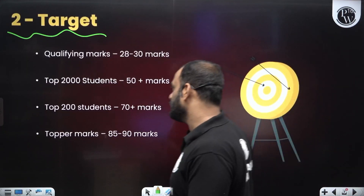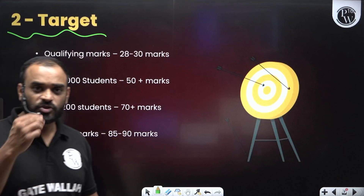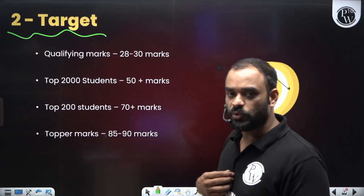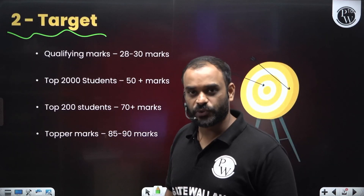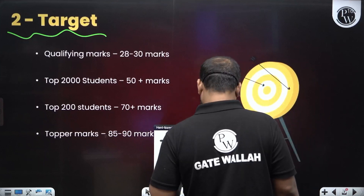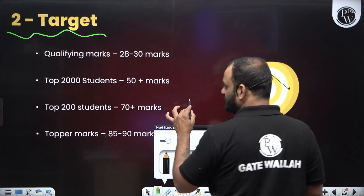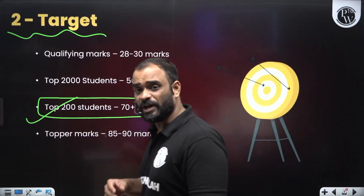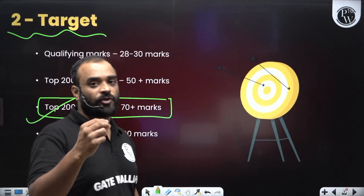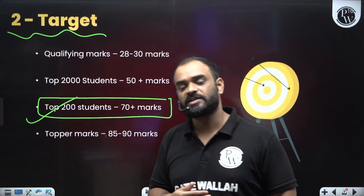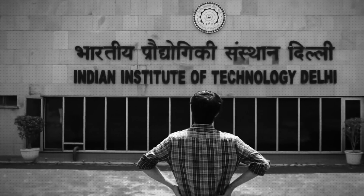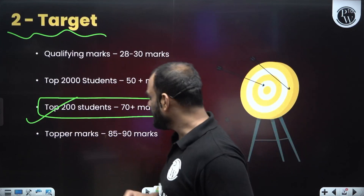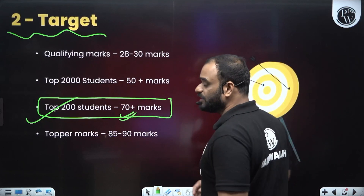The next important point is our target. What should be the marks I want to achieve so that I can get selected in a PSU or an IIT? I recommend you try to score at least 70 plus marks so that you will be in the top 200 students. If you are in the top 200, you may get a call from PSUs for interviews as well as have the choice to select any IIT with your preferred branch or specialization. So try to score at least 70 plus marks in the GATE examination.